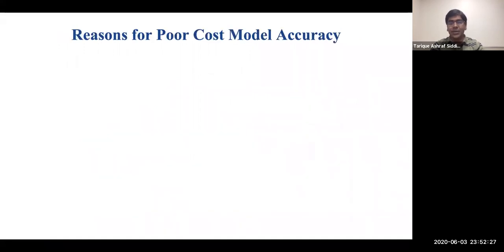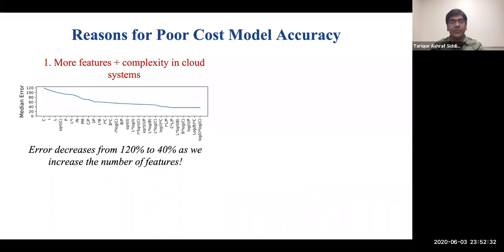We conducted some experiments to understand the reasons behind poor cost accuracy. First, we observed that achieving high accuracy in big data systems requires a lot more features as well as complex transformations that are very hard to model manually or via heuristics. As we can see in this figure, adding more features beyond perfect cardinality and other frequently used features in traditional models causes the error to drop by more than half. Features such as parameter input and partitions are quite important in big data systems and lead to sharp drops in error.